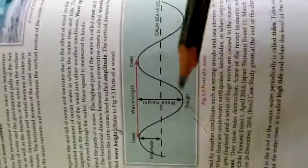Today we are going to discuss tides. The rise and fall in the level of ocean water periodically is called tides. Tides occur twice every day. When the level of water rises, it is called high tide, and when the level falls, it is called low tide.